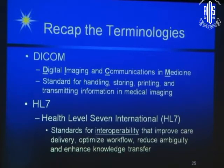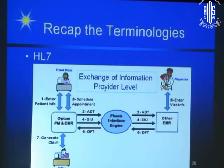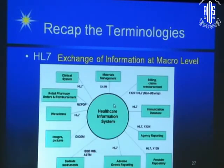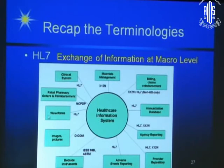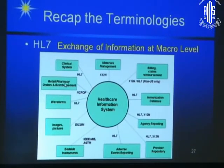When you are communicating with another doctor or hospital, they have to understand exactly what you are saying. If you have a code for it and exchange the information, it gets better. It actually works at two levels — in your clinic, between the physician, front desk, and building. It also operates at a macro level: agency reporting, provider responsibility, bedside instruments for your OT, image pictures, clinical systems, lab, retail pharmacy — all these people have to understand.